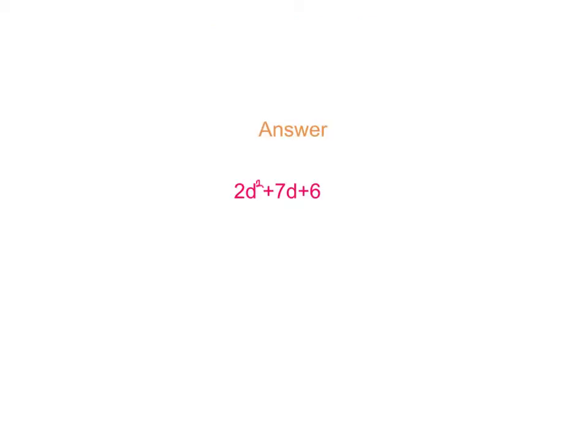The answer for this problem is 2d squared plus 7d plus 6. How we got this answer is because we simplified the problem. What we showed you on the last slide is what we did. So I hope you understand how to simplify and combine by terms.